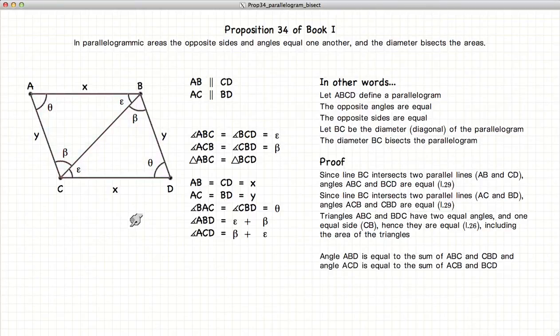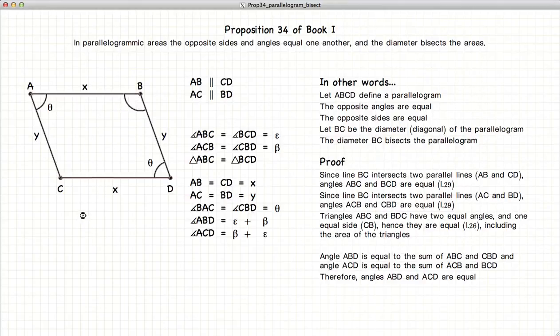And finally, the last angle we have to look at is ABD, which is equal to epsilon plus beta. ACD is beta plus epsilon, which is the same thing. So we've just shown that these two angles are also equal.